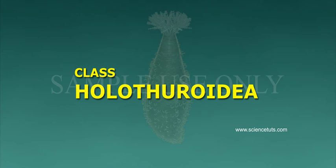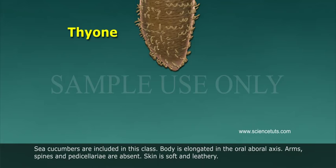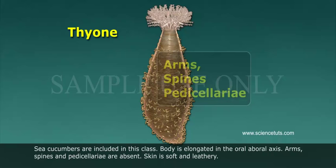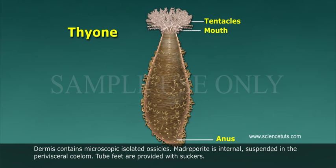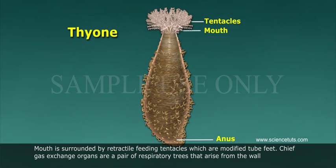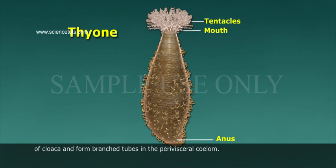Class Holothuroidea. Sea cucumbers are included in this class. Body is elongated in the oral-aboral axis. Arms, spines, and pedicellariae are absent. Skin is soft and leathery. Dermis contains microscopic isolated ossicles. Madreporite is internal, suspended in the perivisceral coelom. Tube feet are provided with suckers. Mouth is surrounded by retractile feeding tentacles, which are modified tube feet. Chief gas exchange organs are a pair of respiratory trees that arise from the wall of the cloaca and form branch tubes in the perivisceral coelom.